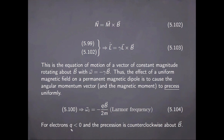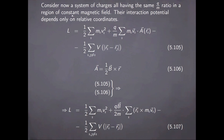Now, in the case of electrons, the charge is negative and the net result is that the precession is counterclockwise about the direction of the magnetic induction field. We can now look at the case of a system of charges all having the same ratio Q over M and situated in a region of constant magnetic field.